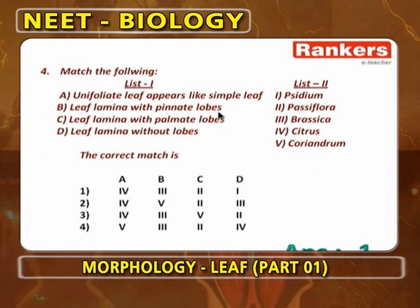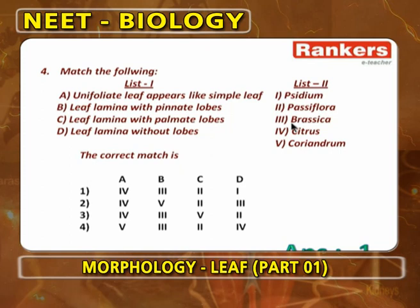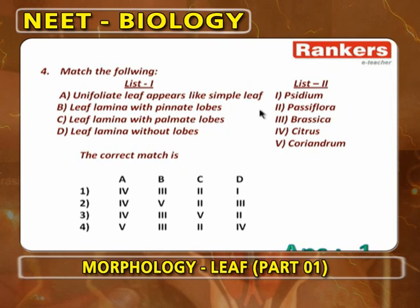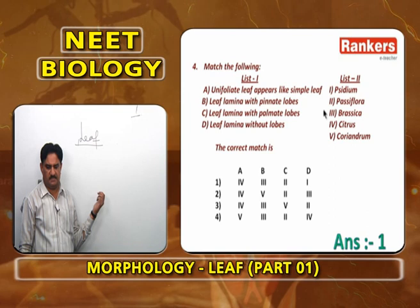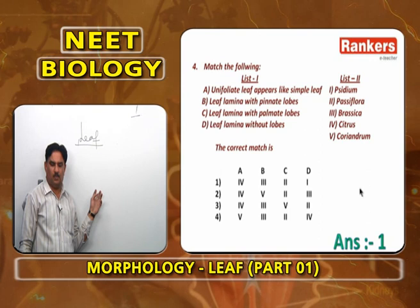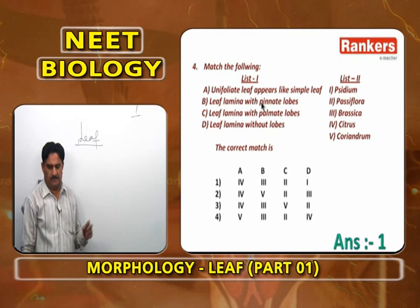Leaf lamina with pinnate lobes is Brassica — pinnate lobes means equal number of lobes on both sides of the midrib. Leaf lamina with palmate lobes means lobes resembling fingers in a palm — example is Passiflora. Leaf lamina without lobes means a totally simple leaf — example is Psidium. So the answer is 4, 3, 2, 1.